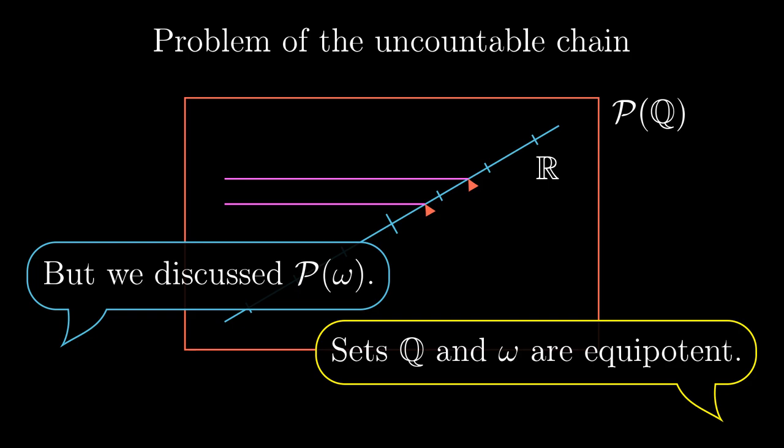Yet, by taking rational numbers instead of naturals, we suddenly get an uncountable number of initial segments. Cool, isn't it?